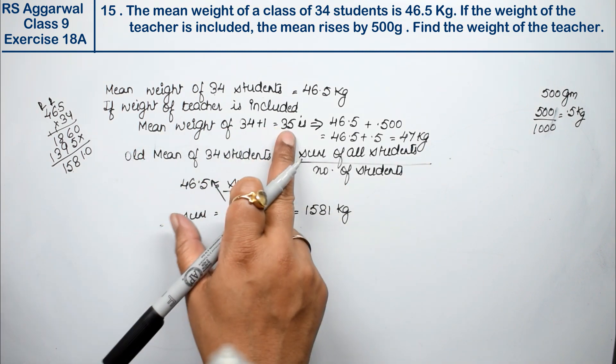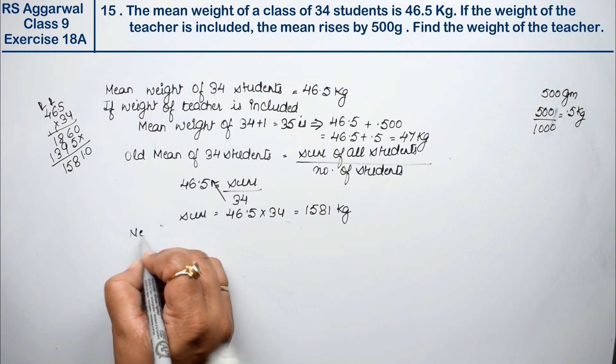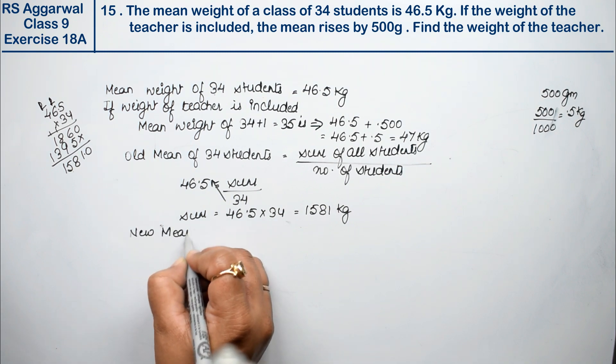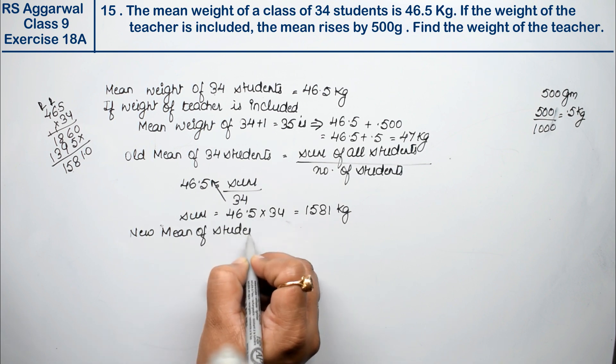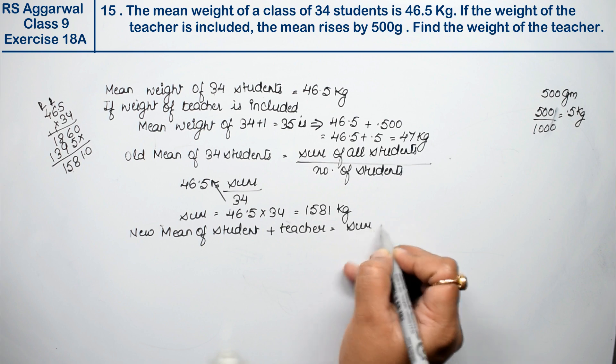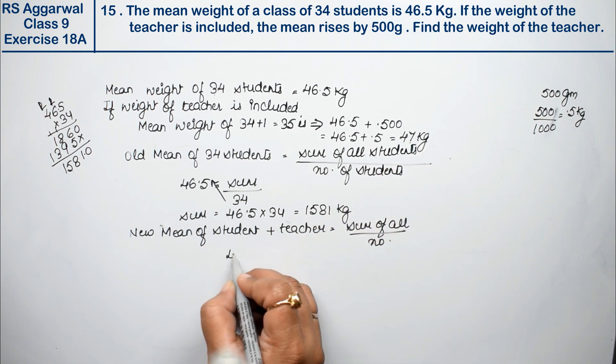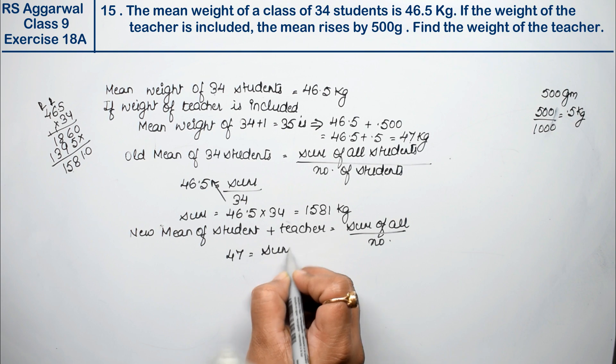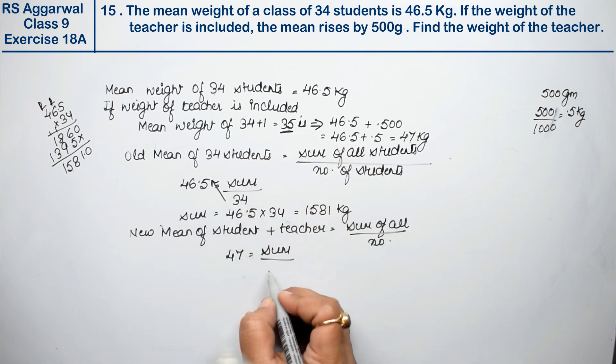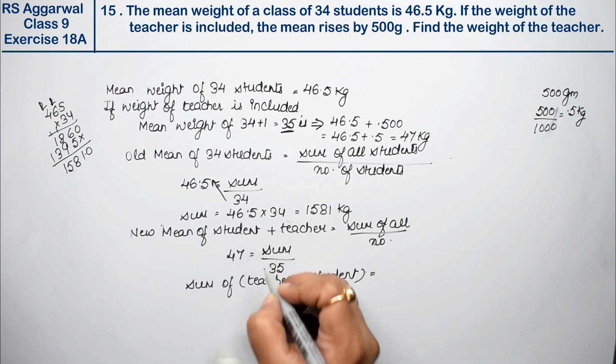Now we need mean weight of 35, student plus teacher. The mean weight is coming as 47 kg. So new mean, new mean of student plus teacher equals sum of all divided by number. Right? How much was it? 47 kg equals sum divided by number. How much is it now? 35. One teacher is added, so sum is? Sum of teacher plus student.